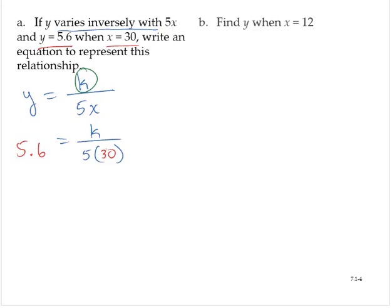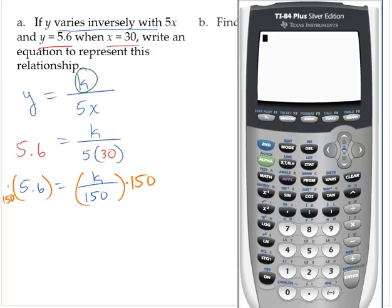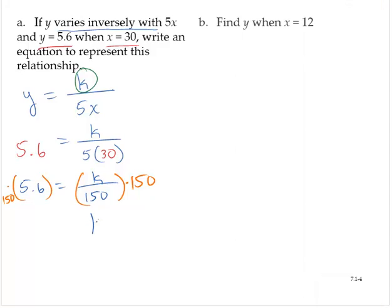So now we'll solve for k. 5.6 is equal to k over 150. Let's multiply through by 150. Let's try that again. 150 times 5.6 is 840. So we find that k is 840.